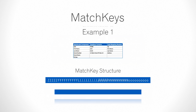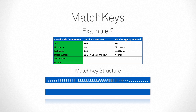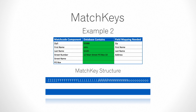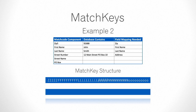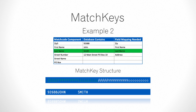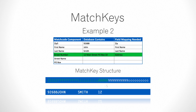Now let's look at example two. We have the same match code components but a different example contact, and because of this the field mapping is different. This illustrates that if a second file has a different format, your mapping in the setup will be different for that database. You do not have to pre-format your data. Using the field mapping and internal parsing logic, Matchup will extract only the relevant data needed to build the match key.